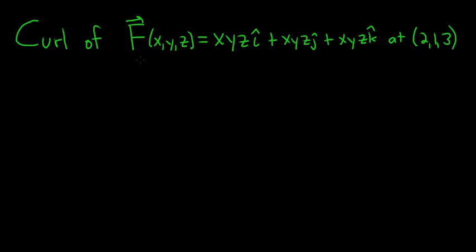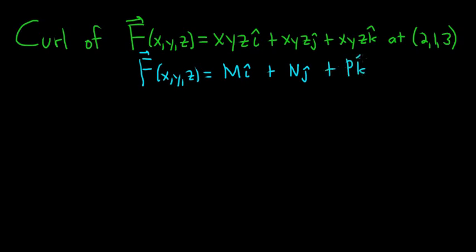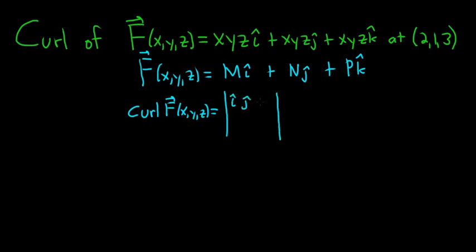First, recall the formula. Whenever you have a vector field written in the form F of x, y, z equals M i-hat plus N j-hat plus P k-hat, we define the curl of this vector field F(x, y, z) to be the determinant of the following matrix. In the first row we have i, j, k; the second row we have ∂/∂x, ∂/∂y, ∂/∂z; and the third row has M, N, P. Very easy to memorize — it's i, j, k then x, y, z order, then M, N, P.